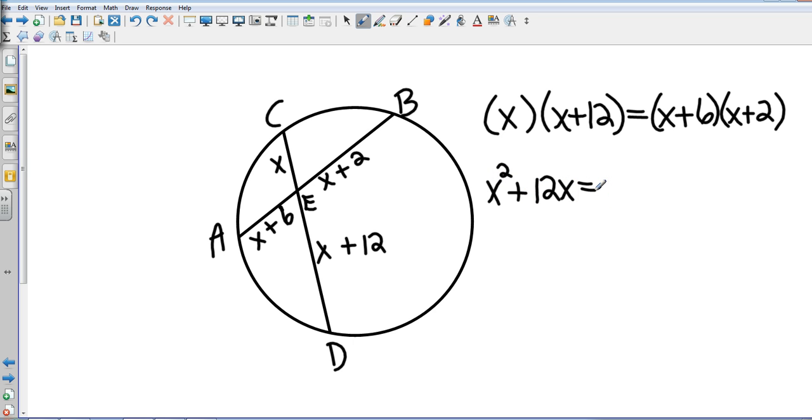Second one's going to be FOIL method, so X squared plus 2X plus 6X plus 12. So we have like terms on both sides, the exact same thing, so X squareds are going to cancel. That's going to leave me with 12X equals, let's go ahead and combine those, 2X plus 6X is 8X.